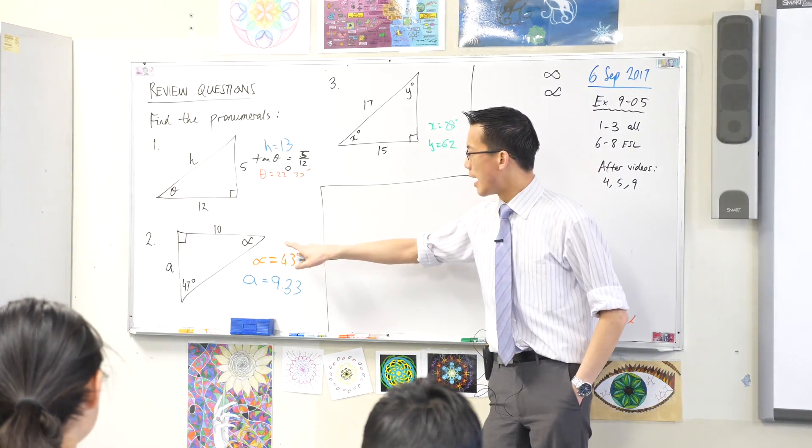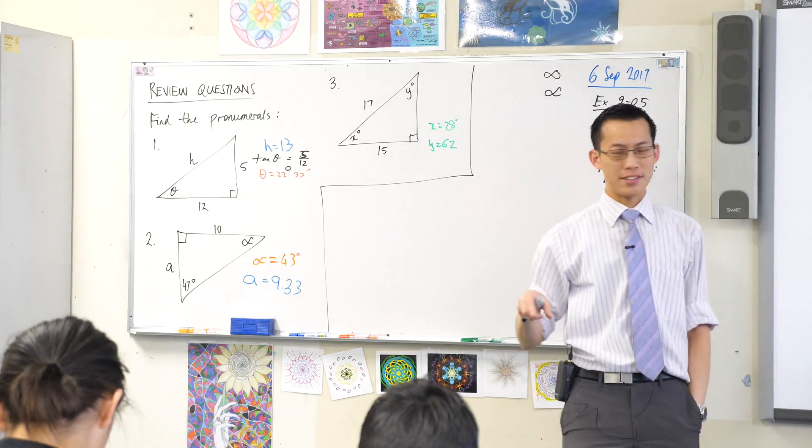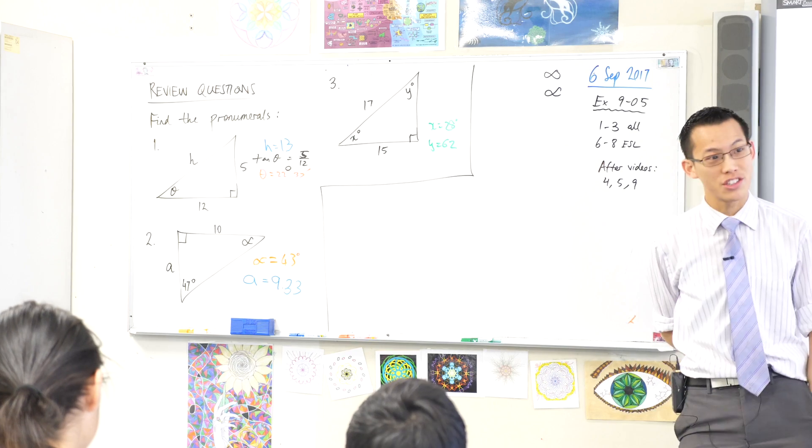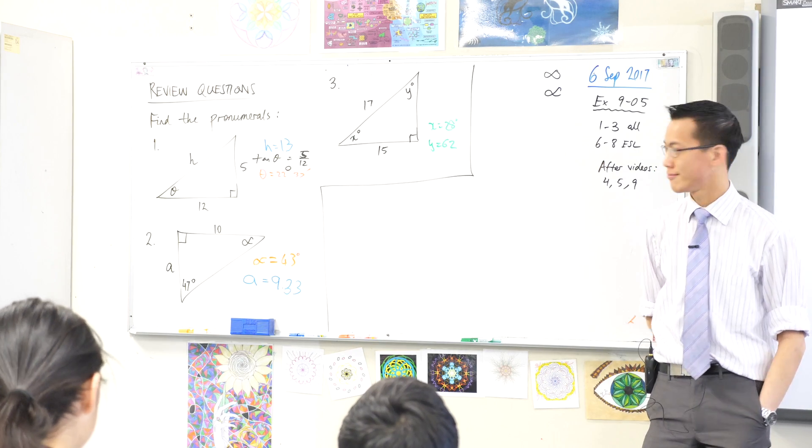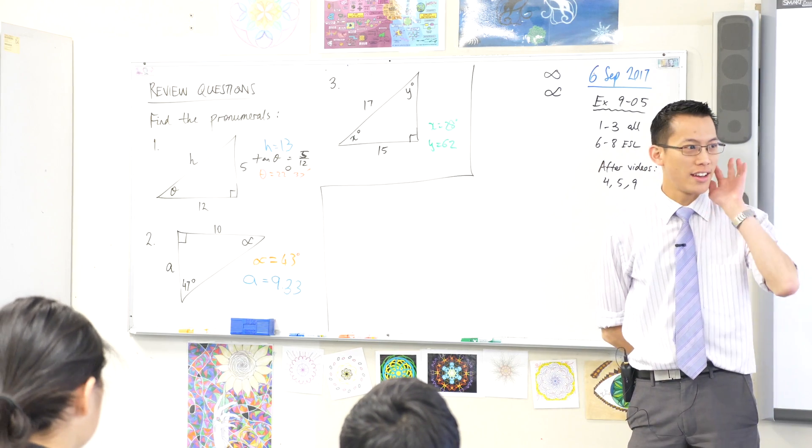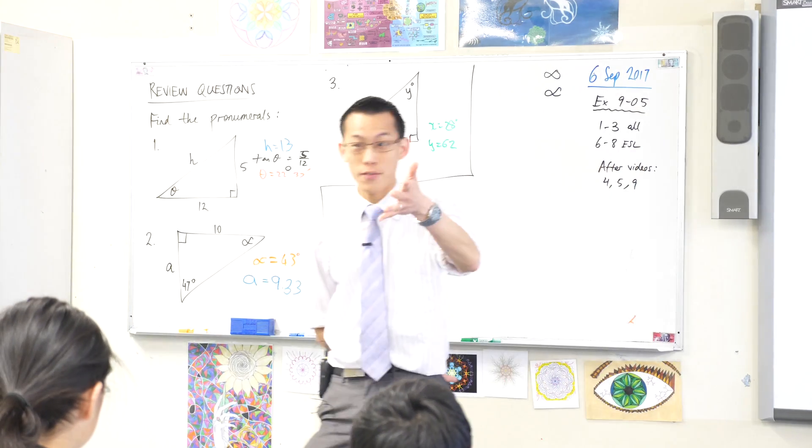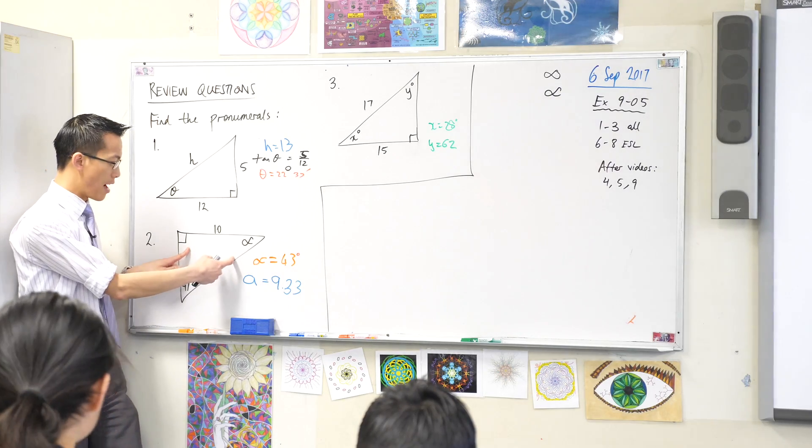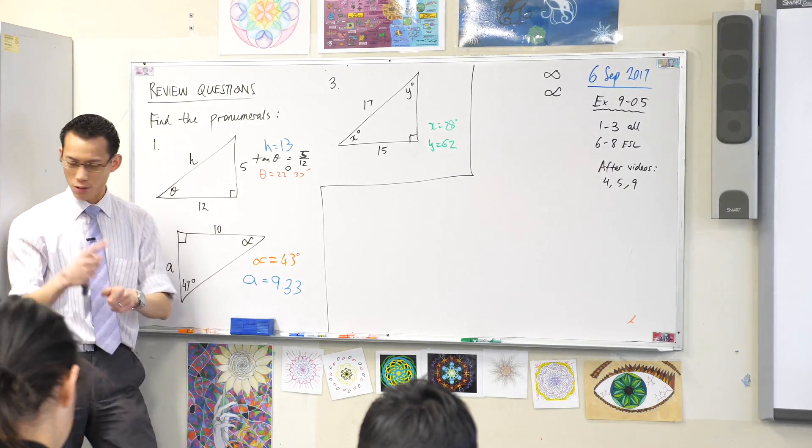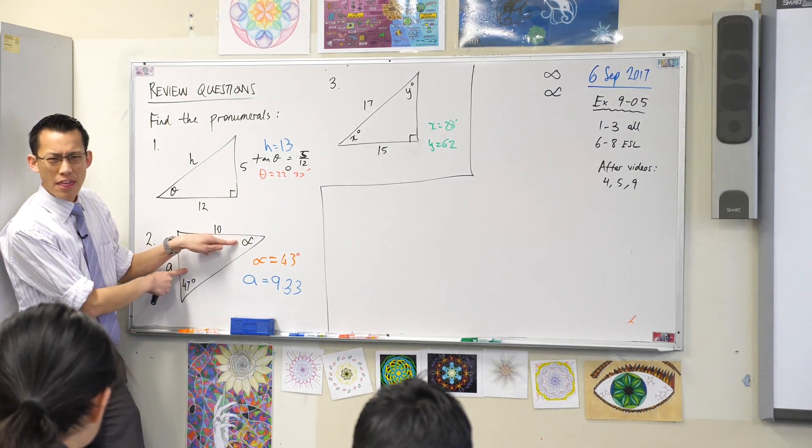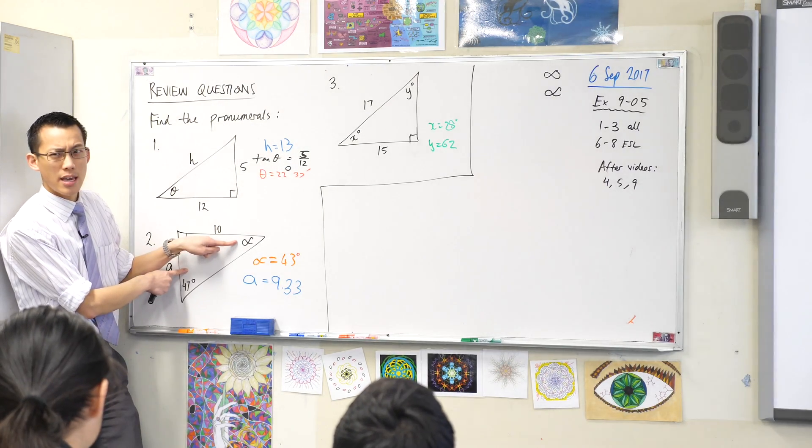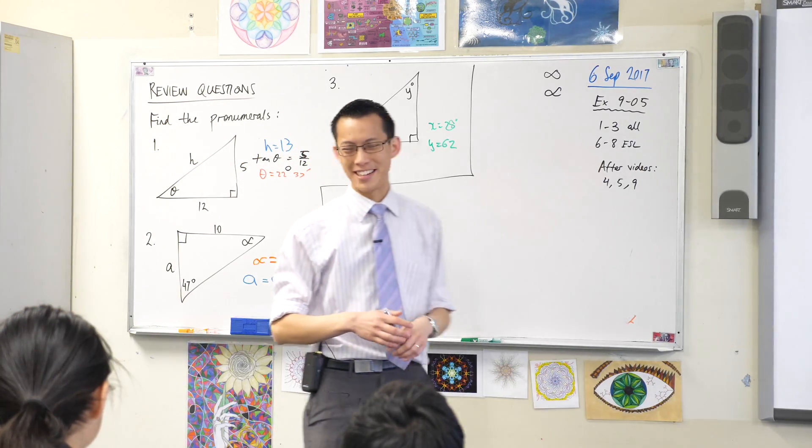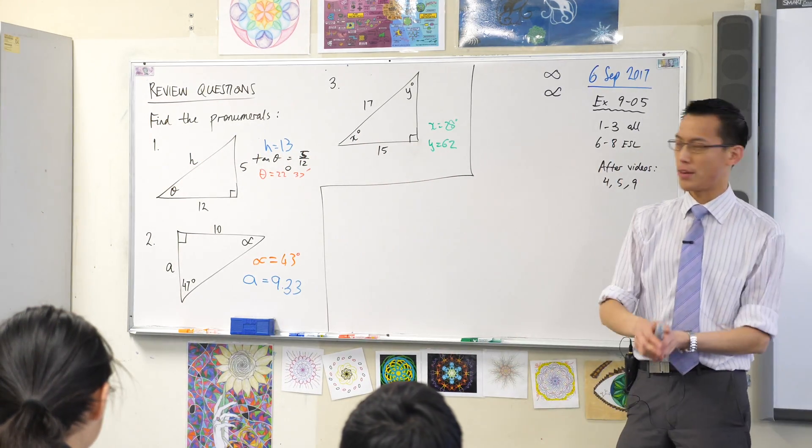Let's have a look at this one. Now alpha doesn't require any trigonometry in this triangle. What could you use? What knowledge can you use? The angle sum of a triangle, right? Because you've got these two angles and that gives you the third one. Another way of thinking about it is in a right angle triangle, these two here, what's their relationship? Starts with C? They're complementary. Very good. They add up to 90, not supplementary. That adds up to 180. So that gives you 43 degrees.